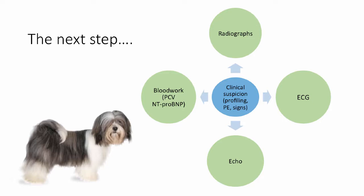Once we've done our physical exam and refined our differential diagnosis list, the next step is to decide what to do diagnostically. That will vary according to the shelter situation and what diagnostics are accessible. After establishing our clinical suspicion, we might move on to blood work including PCV and BNP testing, radiographs, ECG, or echocardiogram. We'll look at some of these tools individually.